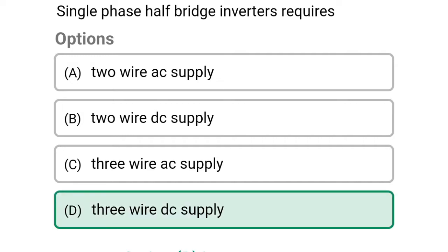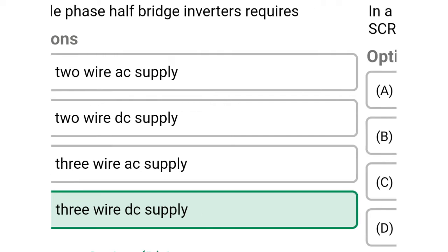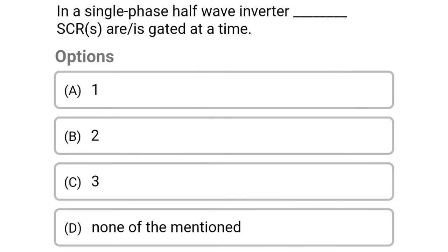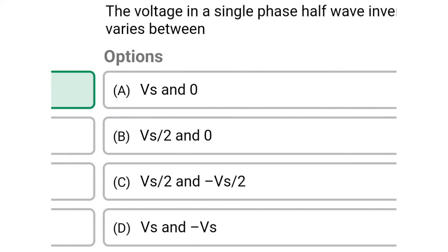Next question: in a single phase half bridge inverter, how many SCRs are gated at a time — option A, 1; option B, 2; option C, 3; option D, none of the above. So the correct answer is option A, 1.